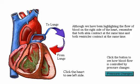Although we have been highlighting the flow of blood on the right side of the heart, remember that both atria contract at the same time and both ventricles contract at the same time. Blood flows from the pulmonary arteries to the lungs and then returns to the left atrium via the pulmonary veins.